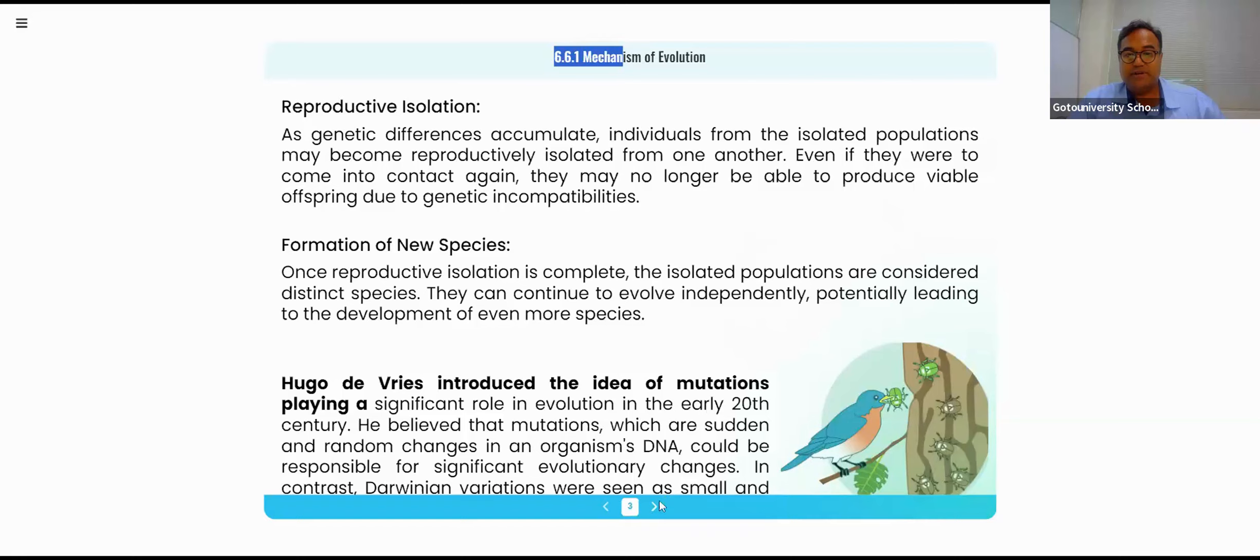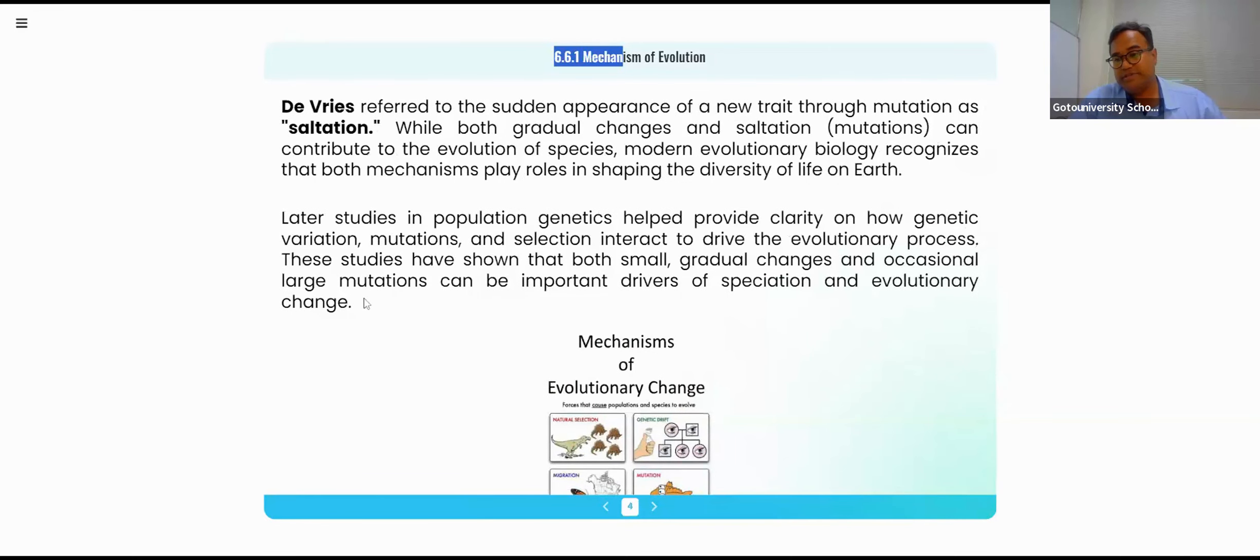In the Hugo de Vries saltation process, sudden appearances of a new trait through mutation is called saltation. Both gradual changes and saltation and mutation can contribute to the evolution of species. Modern evolutionary biology recognizes both mechanisms play a role in shaping the diversity of life.